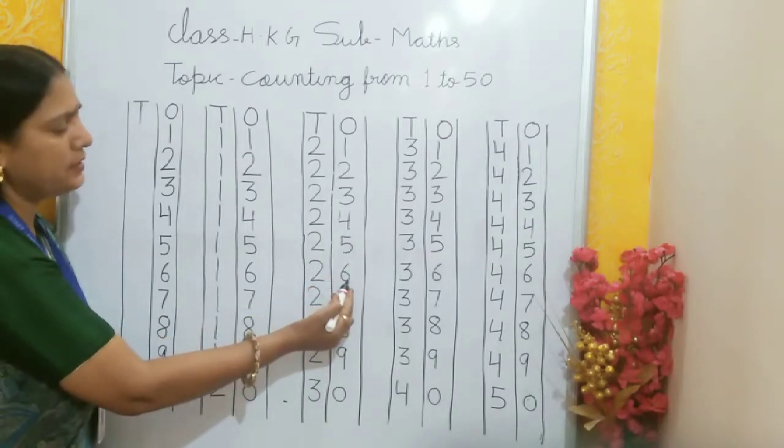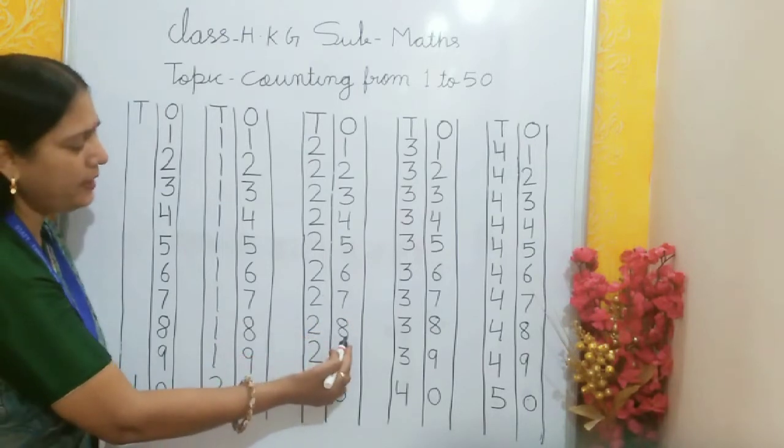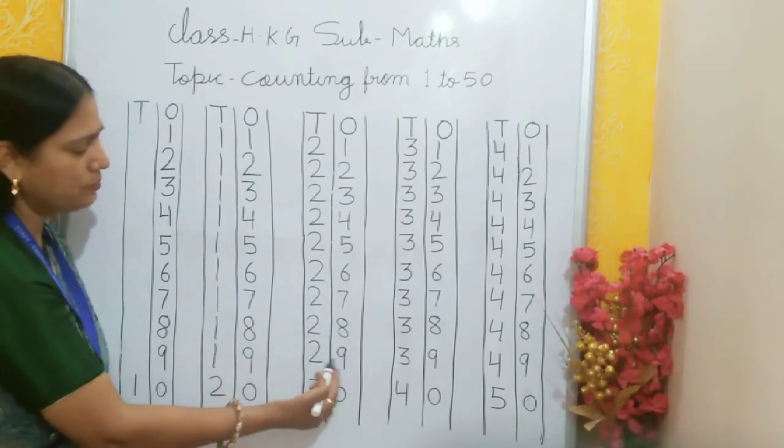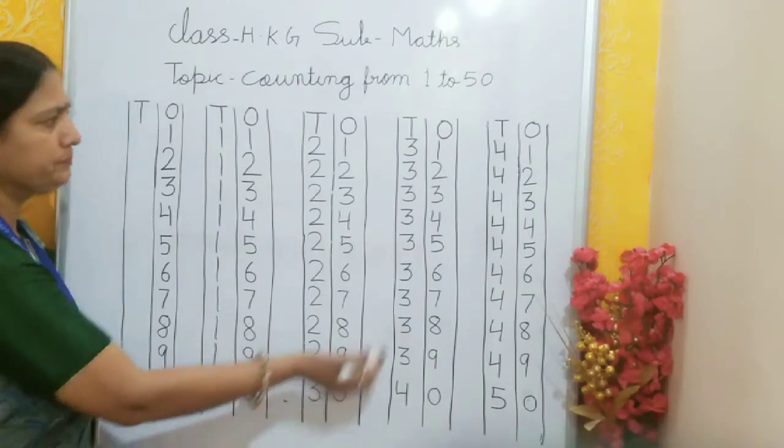2, 6, 26. 2, 7, 27. 2, 8, 28. 2, 9, 29. 3, 0, 30.